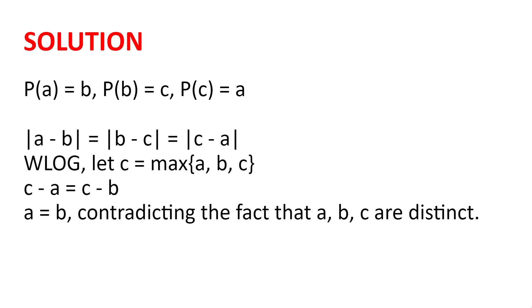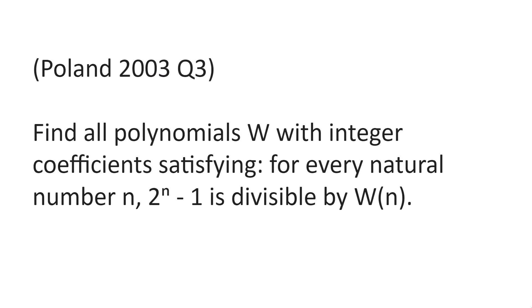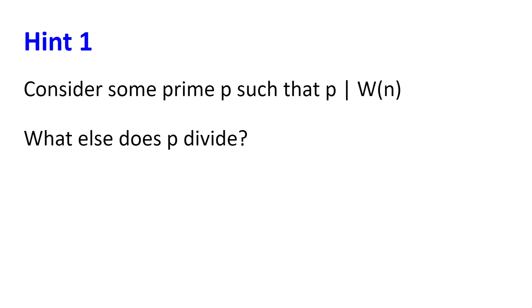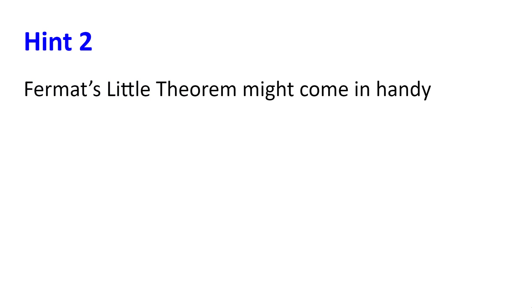Now, we'll move on to our final problem. Find all polynomials w with integer coefficients satisfying that for every natural number n, 2^n - 1 is divisible by w(n). Please pause the video here and have a think about the problem on your own before proceeding to the hints and solutions. Hint 1: Consider some prime p such that p divides w(n). What else does p divide? Hint 2: Fermat's little theorem might come in handy.